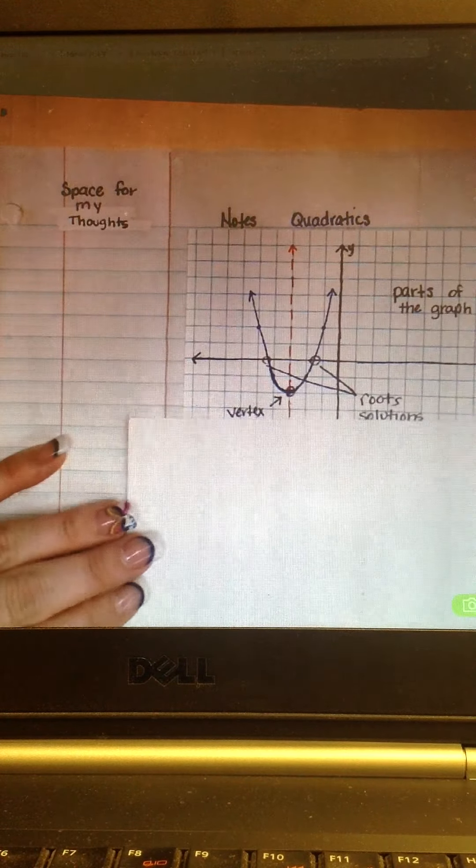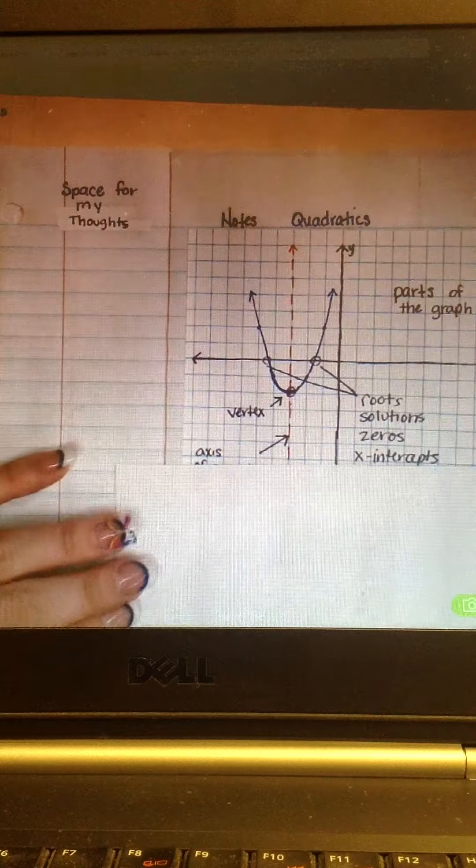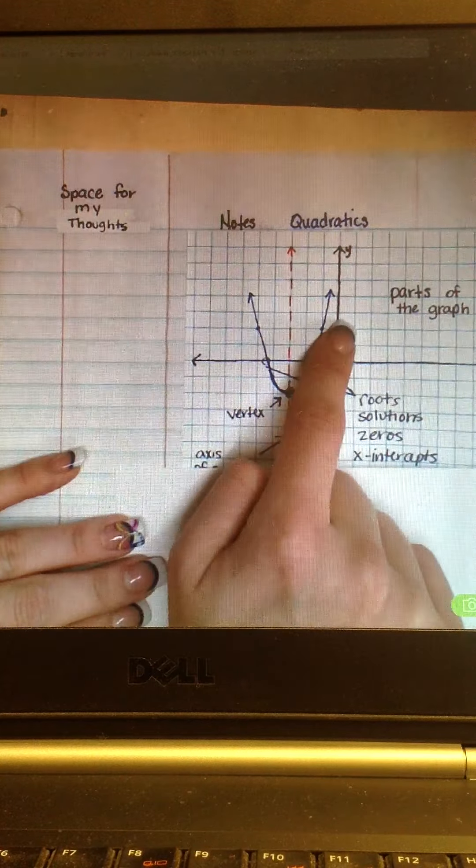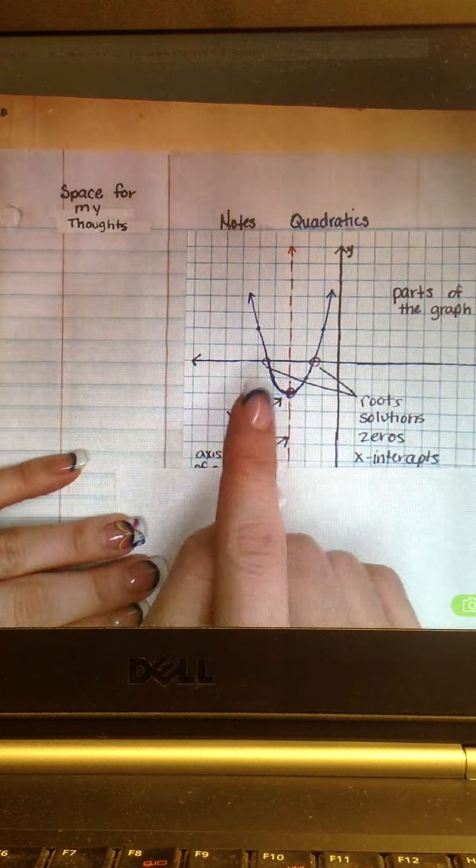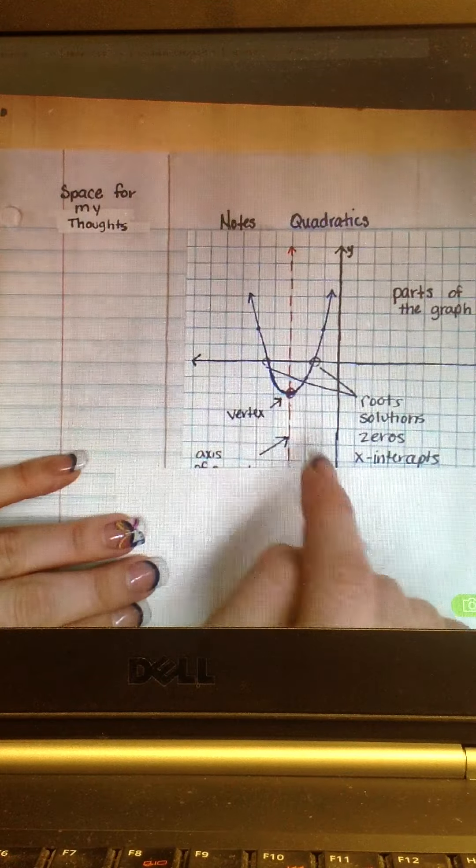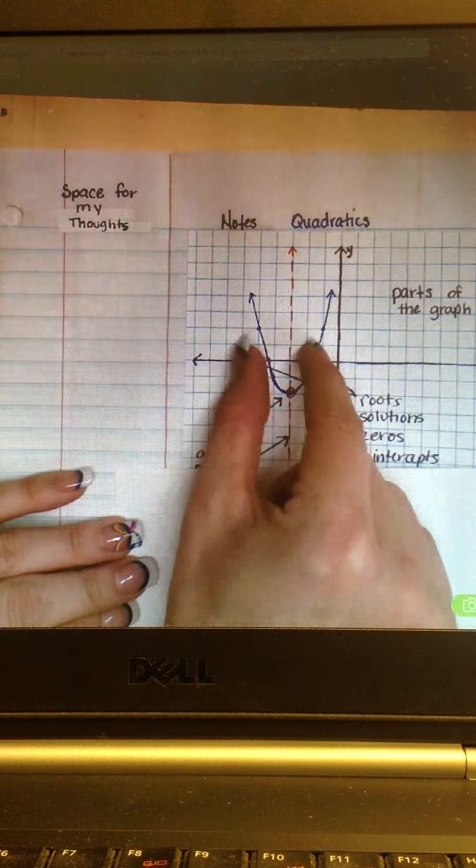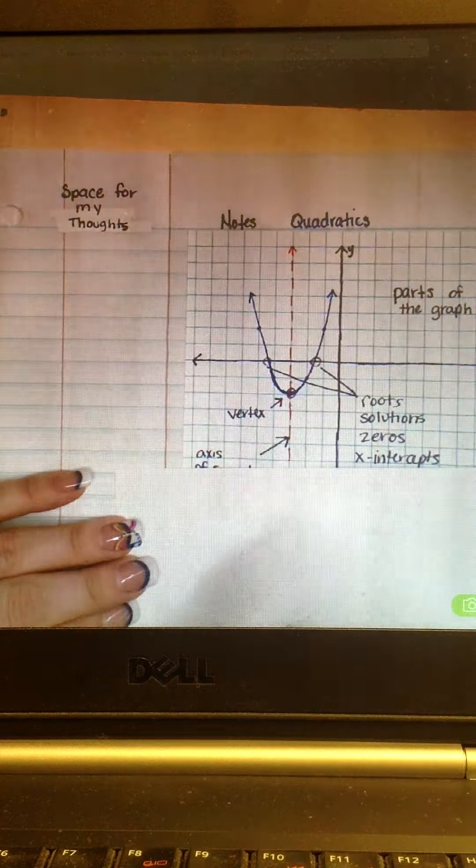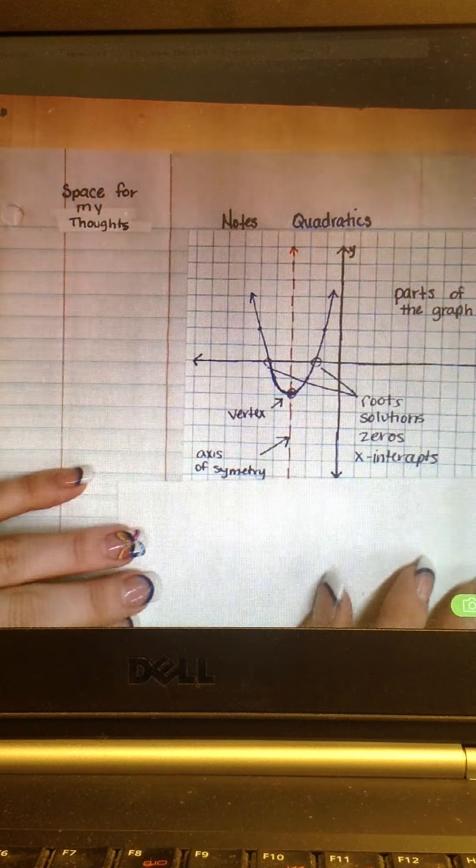So let's start with what a quadratic equation looks like. First of all, a quadratic equation looks like a parabola, it's a U shape, it can go up or it can turn down. In either direction the arrows go on to infinity whether it's focused up or down, it's just fine.